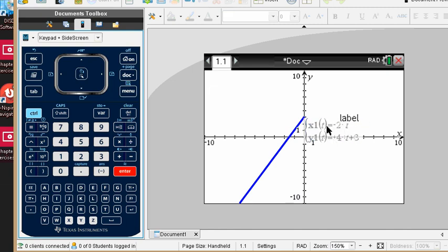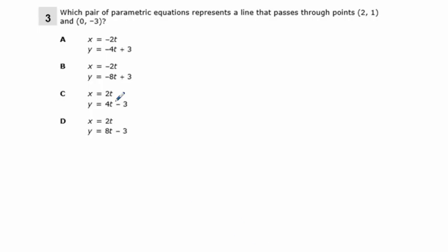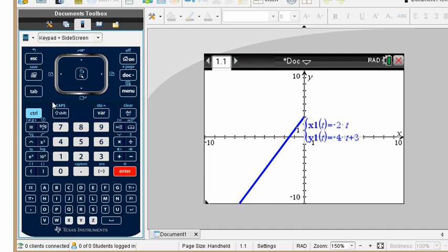And we don't see it, 0 comma 3. So that doesn't look right. So that is not our correct answer. We can just go down the list here.